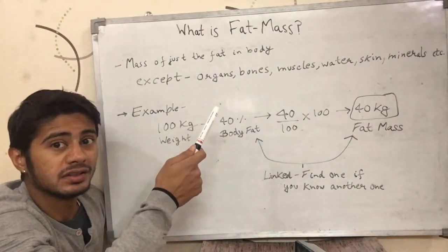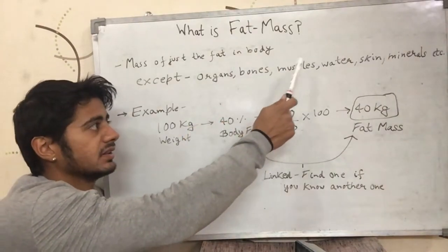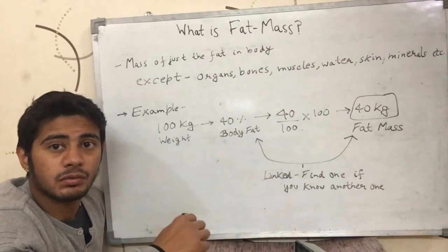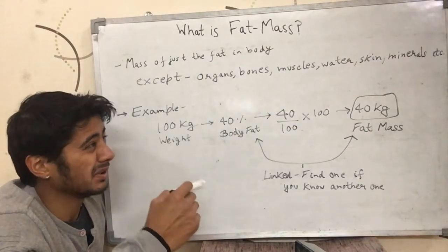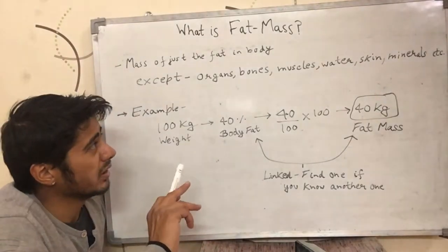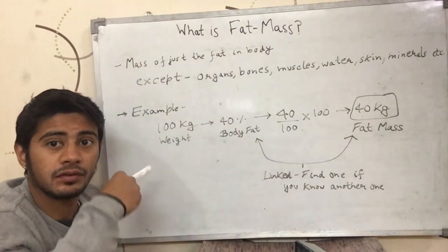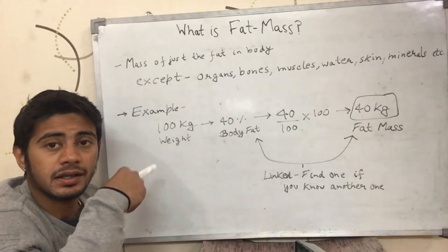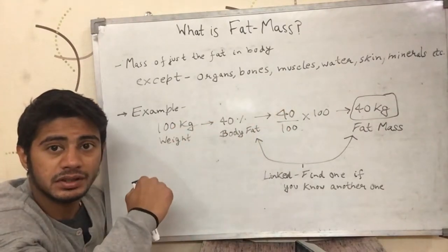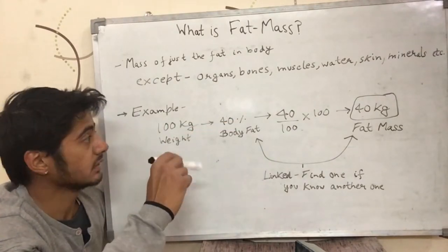The weight of the rest of the things comes from your organs, bones, muscles, water, skin, and there might be some minerals in your body and other things like your hair. So everything except the fat in the body is constituted with these things, and everything except these things is the fat in your body — that is called fat mass.